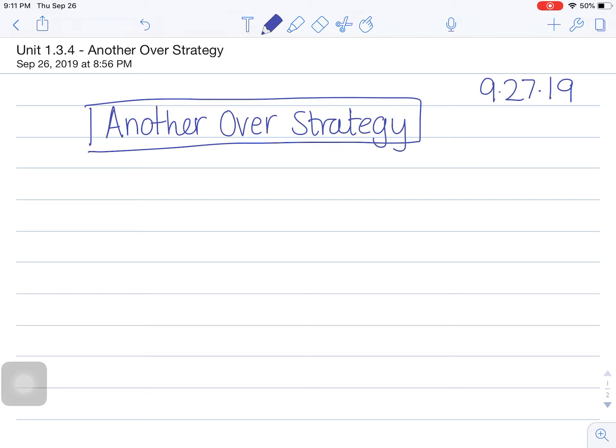Hello and happy Friday. Today is September 27th, 2019. If you can please have your math journals out and open to a clean page, we are going to record a problem string. Today's problem string is called Another Over Strategy. Please make sure you have the heading and the date.